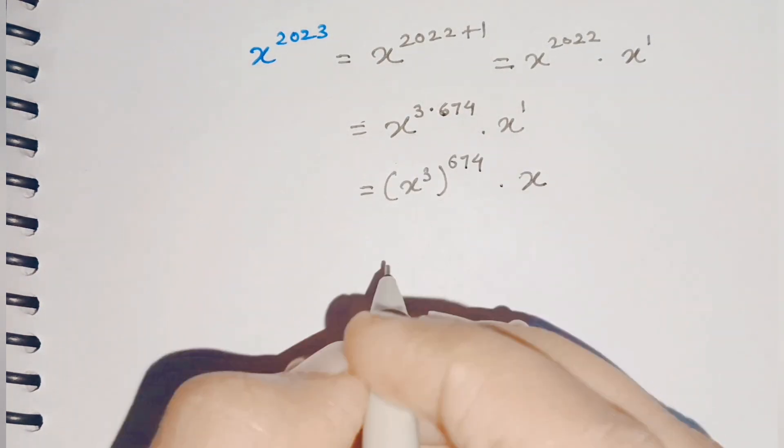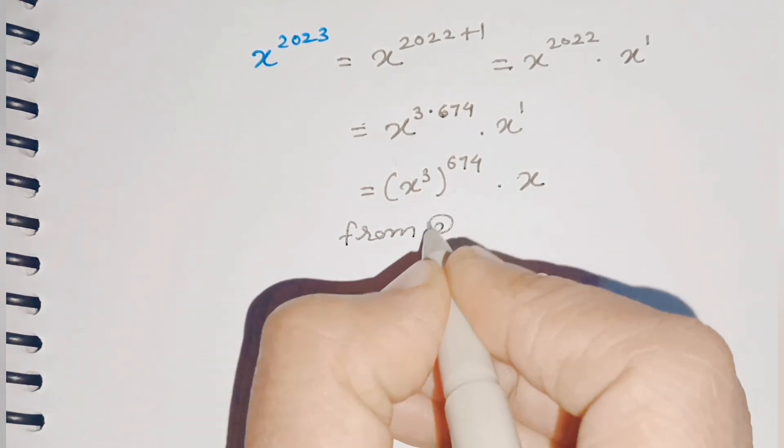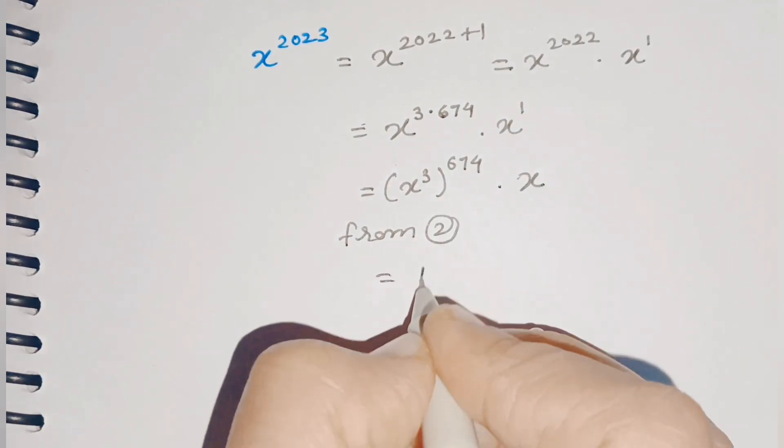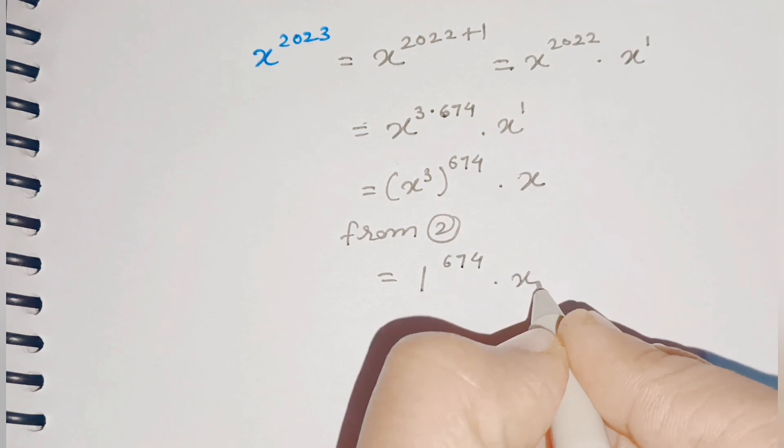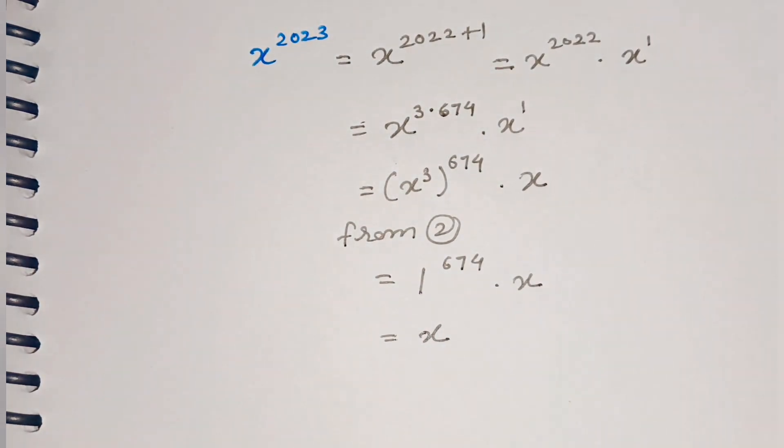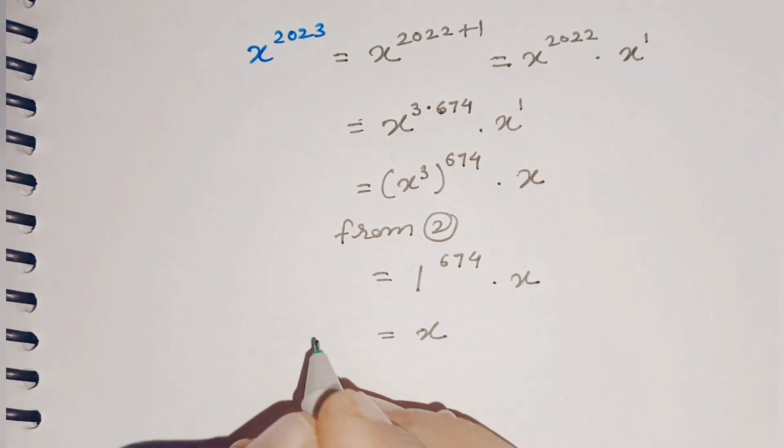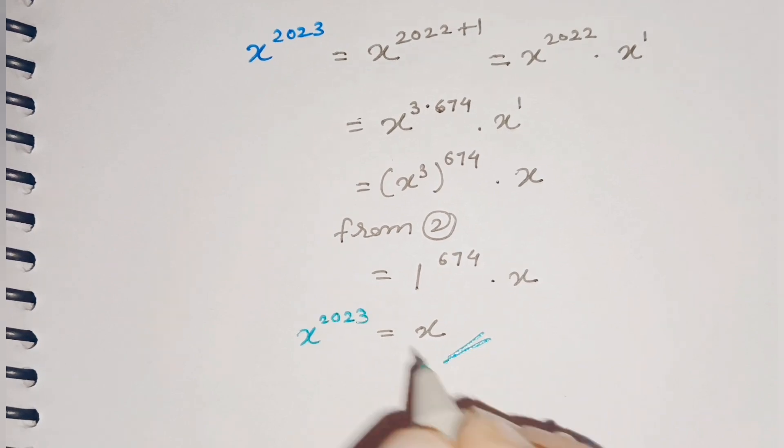From equation 2, we know the value of x³ is 1. So this becomes 1^674 · x. We know that 1 raised to any number is 1, and 1 · x is x. Now we got the value for x^2023 = x.